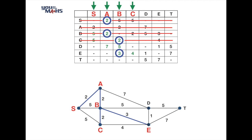We highlight the edge connecting B and E, cross out all entries in row E, and now look at columns S, A, B, C, and E for the smallest number. The smallest number is a 1 in column E, which connects vertices E and D.